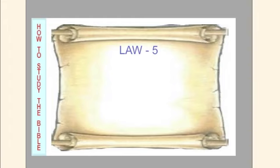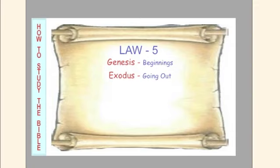First of all, Law — five books. Genesis means beginnings: the beginning of creation, the beginning of the human race, the beginning of sin, and the beginning of a special nation through the seed of Abraham that would bring the Savior to the world. Exodus means going out. That nation grew and finally in Egypt found themselves in Egyptian bondage. God chose Moses to lead Israel out, and you'll find this recorded in the book of Exodus.